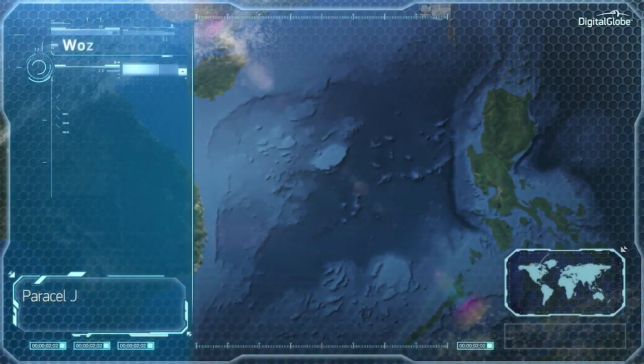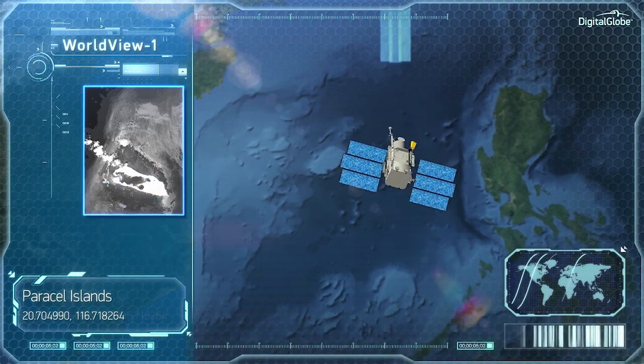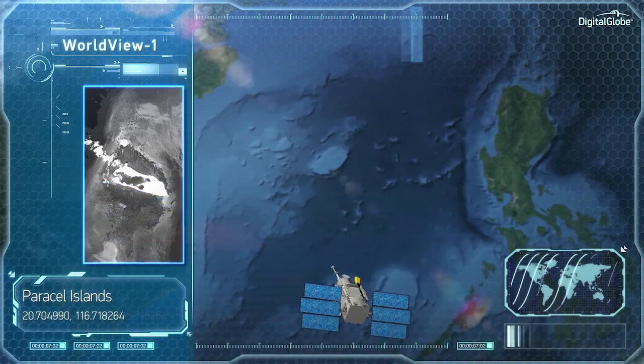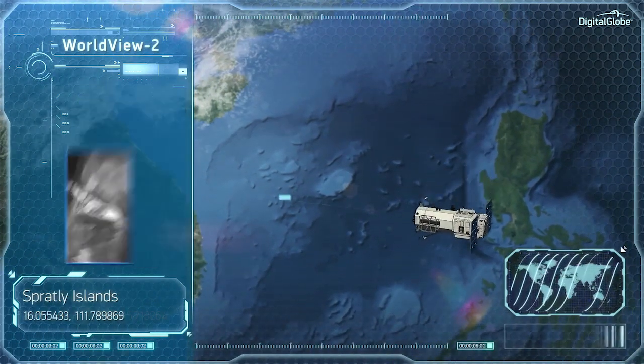Because our satellites are so agile, we can create dynamic collection plans that minimize clouds and maximize the collection of useful images for each orbit.